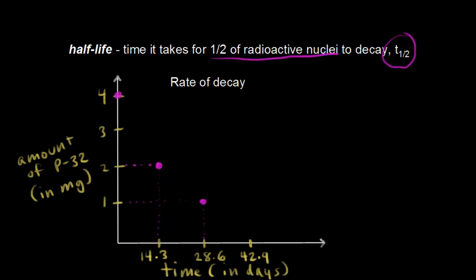What's half of one? It's 0.5. That's about 0.5, and so that gives us an idea about where our next data point is.